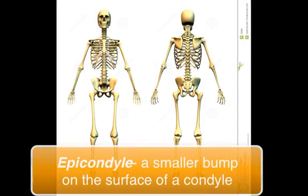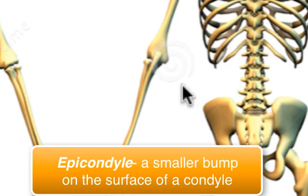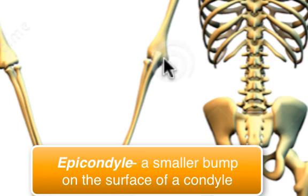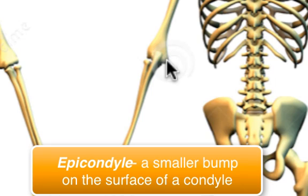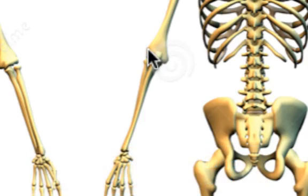An epicondyle is merely a bump on top of a condyle. Down here at the distal end of the humerus, you've got the condyles, but then you've got smaller bumps on top of them called epicondyles. One is called the medial epicondyle, and this one is called the lateral epicondyle.